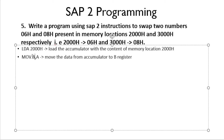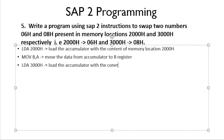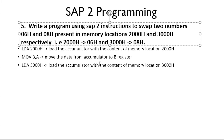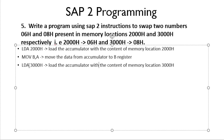Now we need to load the other address, which is 3000H, into the accumulator. We use the SAP 2 instruction LDA 3000H — same as the previous LDA instruction — which loads the accumulator with the content of memory location 3000H, that is 08H. By the end of this instruction the accumulator will contain 08H.